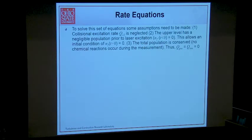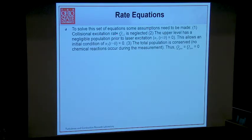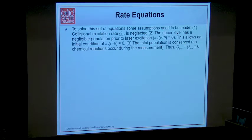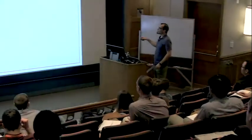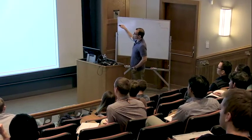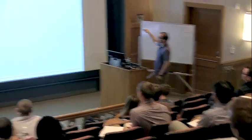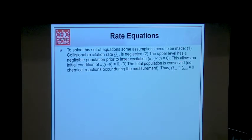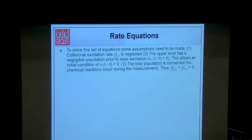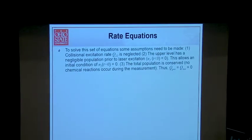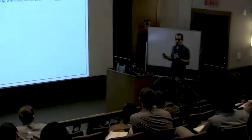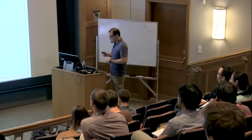The assumptions we are working in to solve the set of equations are: we don't have collisional excitation, meaning collisions alone won't send things from the ground state up. We're only coupled by the laser. We assume the upper state does not have any population prior to laser excitation. And we assume there's no chemistry during the course of excitation and the subsequent emission — so no predissociation, no ionization during the measurement.